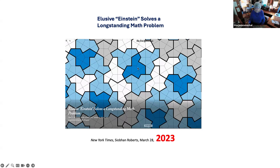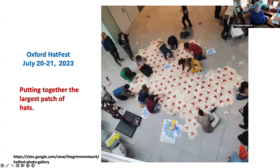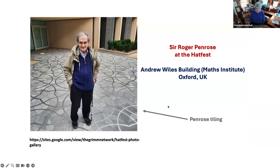And that was called the Einstein — meaning a single tile. This is the 'elusive Einstein, solved a long-standing math problem' by Chaitanya Roberts. It was such a sensation that Oxford University hosted a hat fest a few weeks later in July last year. Everybody who wanted to could get down on the floor and actually try to build out the tiling. This is part of what was accomplished there — people on the floor building the tiling, the largest patch ever made. There's no translational symmetry here at all. Roger Penrose came, which was great. He was the discoverer of the two tiles that tile only non-periodically, but whether there would be one was still the open question. He was very happy to be there. The event was held at the Andrew Wiles building, whose courtyard is paved with Penrose tiles.